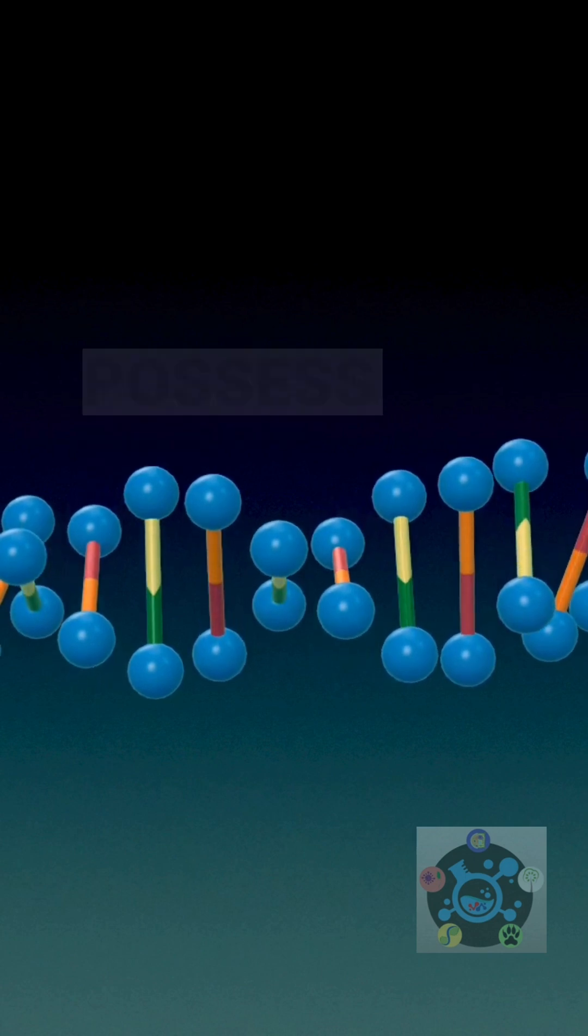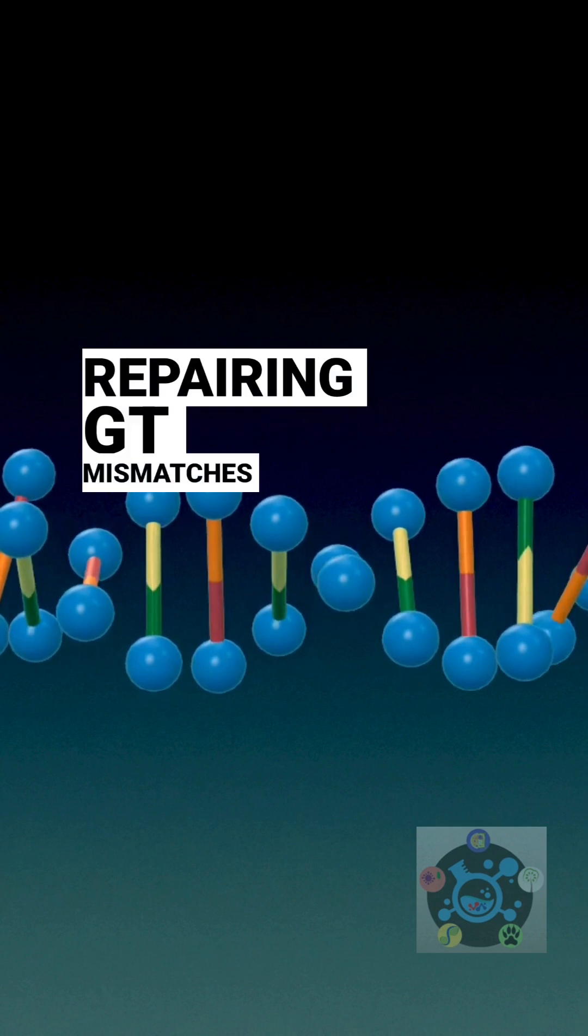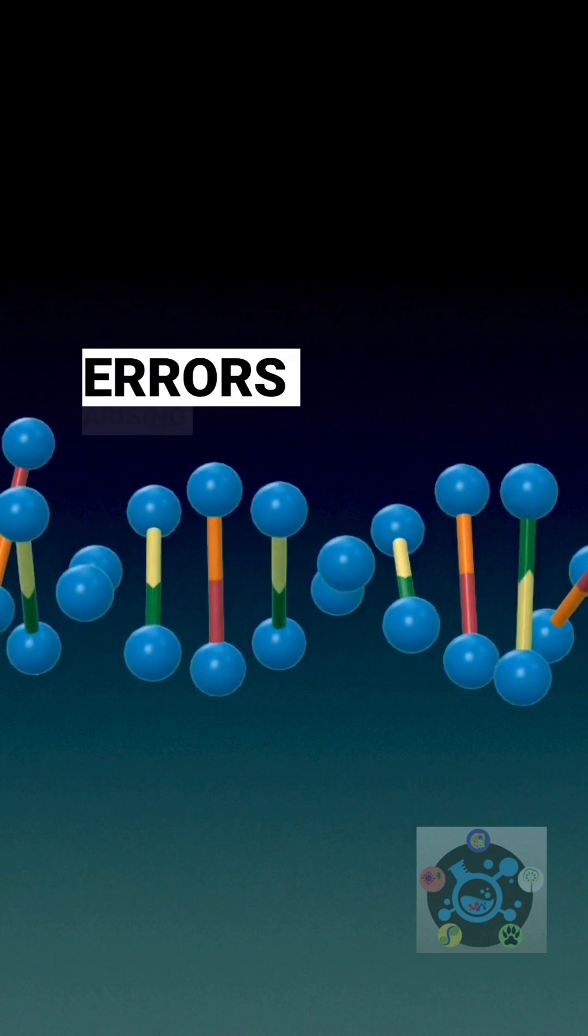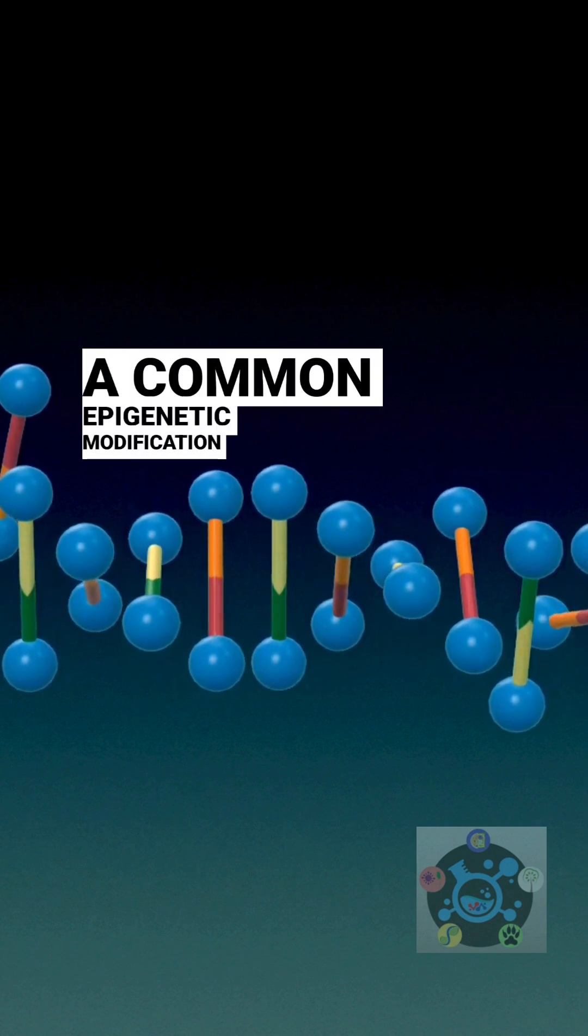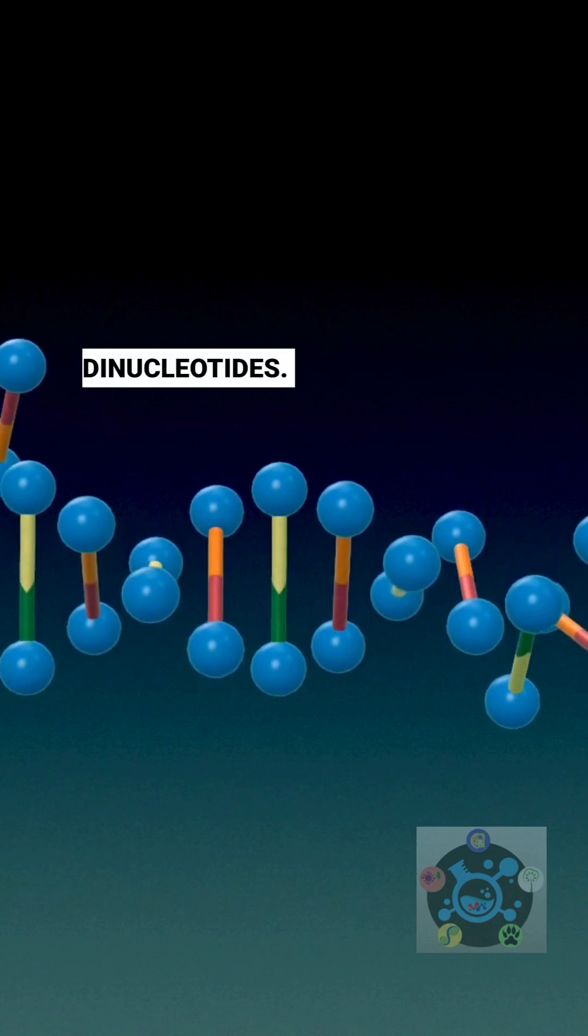Eukaryotic cells likely possess a specialized system for repairing G-T mismatches due to the frequent occurrence of these errors arising from the deamination of 5-methyl cytosine, a common epigenetic modification, particularly within CpG dinucleotides.